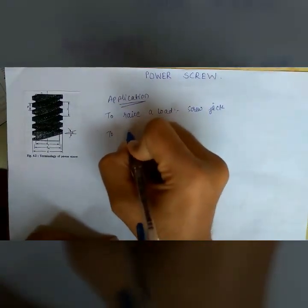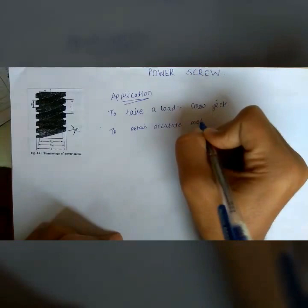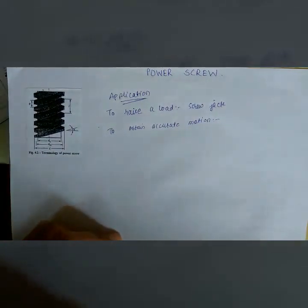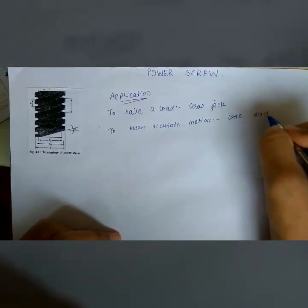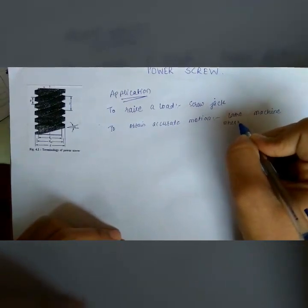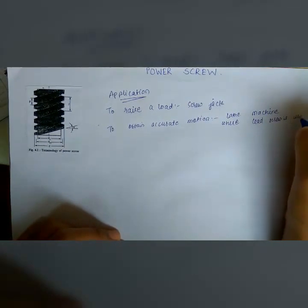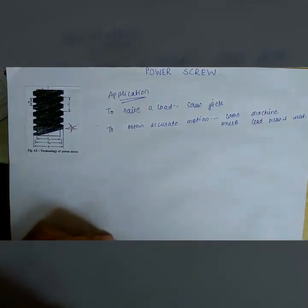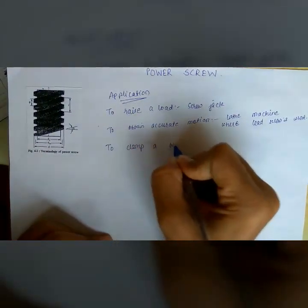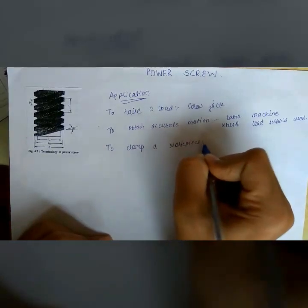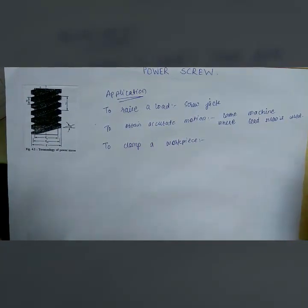The second application is to obtain accurate motion. This accurate motion can be seen in a lathe machine where we use a lead screw. The third application is to hold or clamp a workpiece — this is the bench vise which we use in a workshop for clamping jobs.